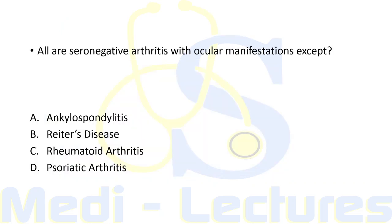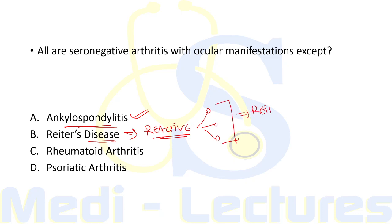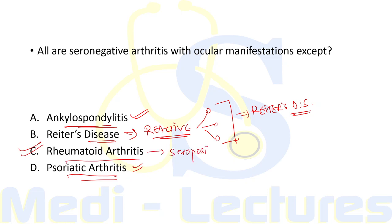Coming back to our question: ankylosing spondylitis is seronegative. Reiter's disease is a type of reactive arthritis — a triad of seronegative oligoarthritis, conjunctivitis, and nonspecific urethritis — so it is also seronegative with ocular manifestations. Psoriatic arthritis is also in this group. The correct answer is rheumatoid arthritis, as it is a seropositive arthritis.